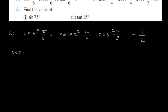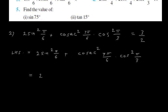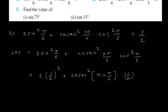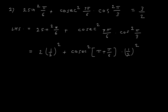Take your pen and paper and start solving these problems. Left hand side: it is 2 sin square pi upon 6 plus cosec square 7 pi upon 6 into cos square pi upon 3. Cos 60 is 1 upon 2. So I write 1 upon 2 the whole square plus cosec square 7 pi upon 6, which I will write as pi plus pi upon 6. This gives 2 into 1 upon 4.